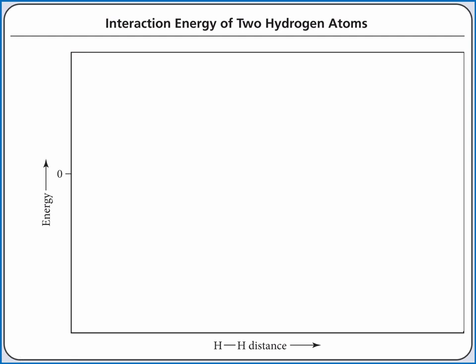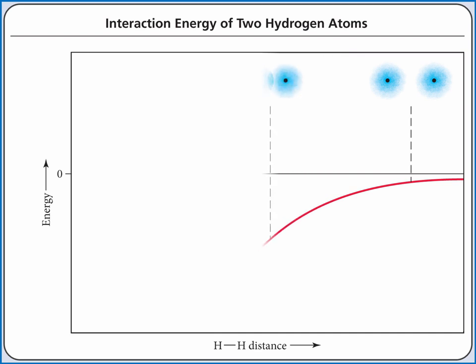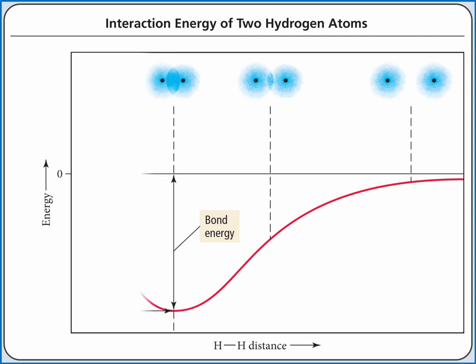Let's begin by imagining we have a system with just two hydrogen atoms initially apart from each other. As we bring these two hydrogen atoms closer together, the energy of our system begins to decrease because the half-filled 1s orbitals of these two hydrogen atoms begin to overlap. At some point in bringing these nuclei closer together, there will be a minimum energy for our system. The difference in energy between our hydrogen atoms being far apart and the minimum energy is called our bond energy.